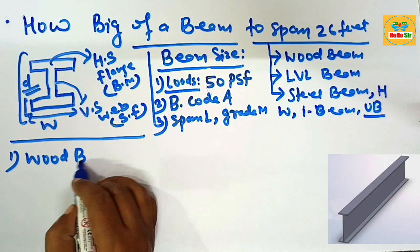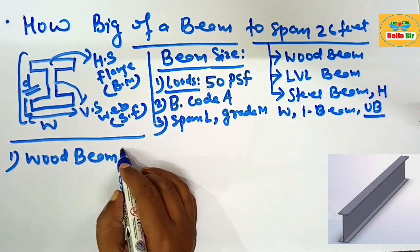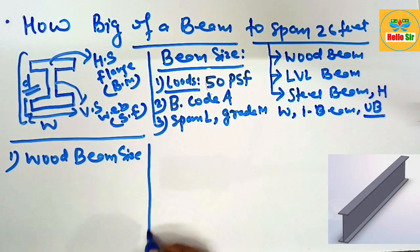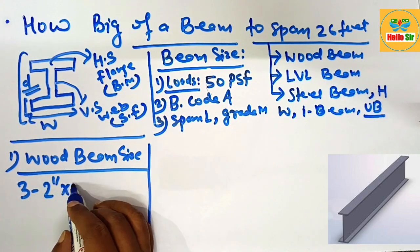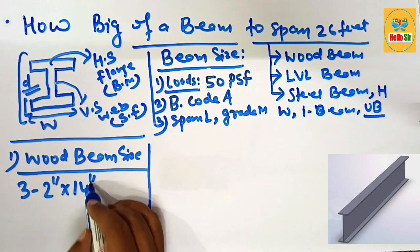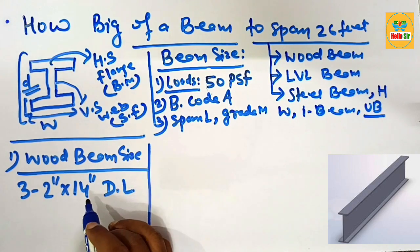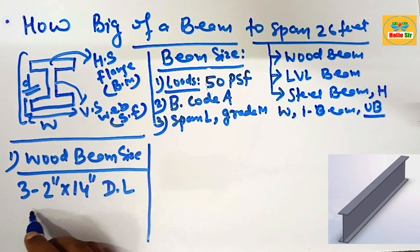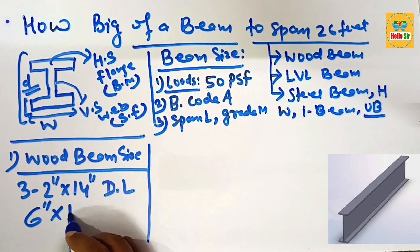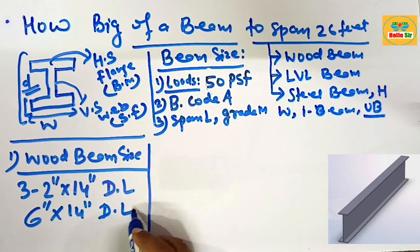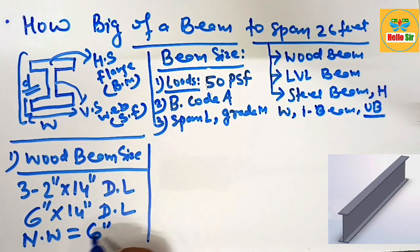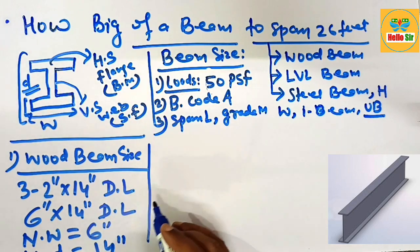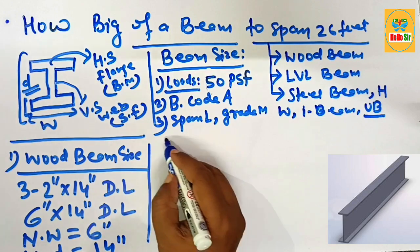For the wood beam size required to span a 26-foot distance, you should take three pieces of 2-inch by 14-inch dimensional lumber. This can also be written as a 6-inch by 14-inch dimensional lumber, with a nominal width of 6 inches and a nominal depth of 14 inches. This is the wood beam size required to span 26 feet.